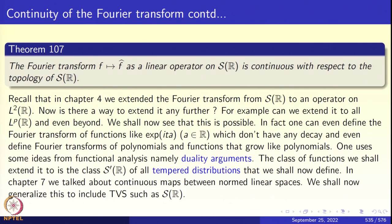Let us record this as an important result. Theorem 107: The Fourier transform as a linear operator on the Schwarz space is continuous with respect to the topology we have introduced on the Schwarz space. We introduced a very strong topology, but even with this strong topology the Fourier transform is a continuous operator. In Chapter 4 we were interested in the L^2 norm topology, which is much weaker than this new topology on the Schwarz space. Why have we introduced this new topology? We shall see in the next capsule where we introduce tempered distributions. This is a very good place to stop. Thank you very much.